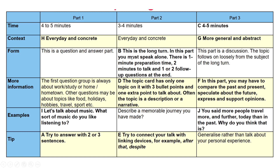For part two, the missing option here: in this part you must speak alone. There is one minute preparation time, two minutes to talk, and one or two follow-up questions at the end. This is commonly known as the cue card. You get the topic, one minute to prepare, then you speak for one to two minutes. The topic card has only one topic with three bullet points and one extra point to address. Often the topic is descriptive or narrative. You cannot change the topic — whatever you get, you must work with it.